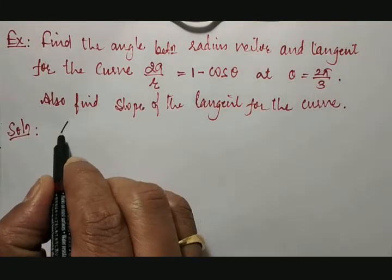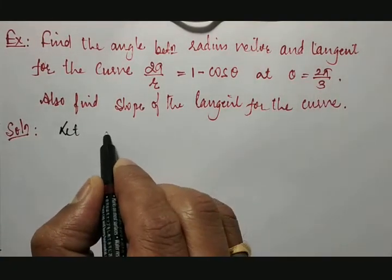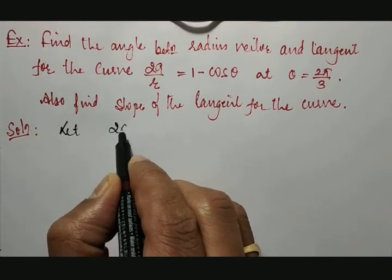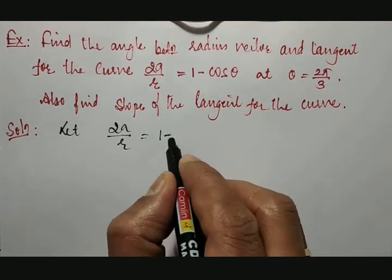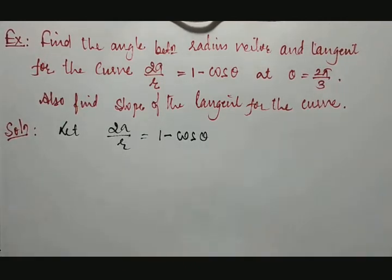For that, first we will take the given curve, that is 2a/r = 1 − cos θ.